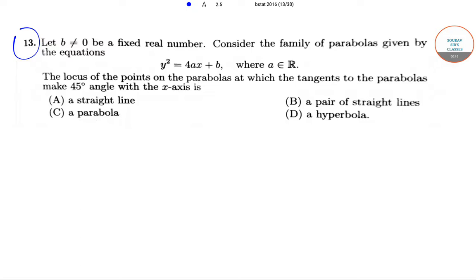In question number 13, it has been said that let b not equal to 0 be a fixed real number. Now we need to consider the family of parabolas which are given by the equations y² = 4ax + b, where a belongs to ℝ.